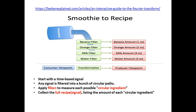Consider this smoothie as your actual signal represented in time domain — your discrete time signal x(n). In this discrete time signal, you want to find what frequency components are present, and at each frequency component how much amount of data or information or amplitude is distributed. To do that, you are going to apply filters to this smoothie.